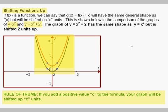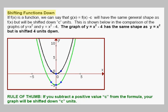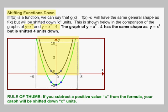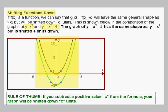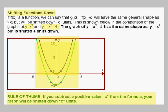Here we added 2 to our formula and the resulting graph moved up 2 units. Shifting functions down is done just by subtracting values from the formula. Here we have y equals x squared with vertex at (0, 0), and we compare that to y equals x squared minus 4, where we subtract 4 from the formula. The result is a parabola with vertex shifted from (0, 0) down to (0, -4). The rule of thumb is that if you subtract a positive value c from your formula, your graph will be shifted down by that amount.